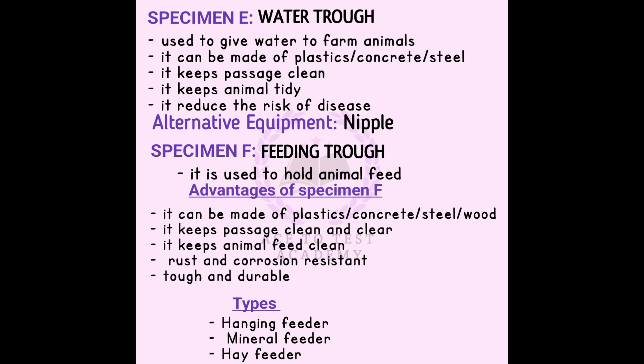If you use another material for feeding, it may rust. Types of feeders include: the hanging feeder, which hangs from the top; the mineral feeder, which holds minerals and feed additives; and the hay feeder, which holds hay/grass. The hanging feeder is common for broiler-based poultry beds.